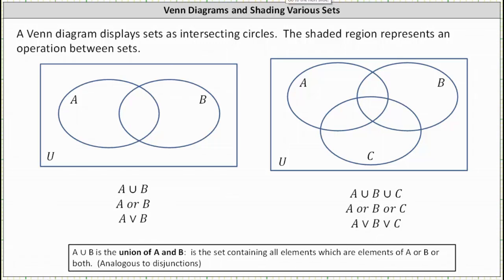Now let's get a couple of examples of unions. On the left, we have A union B, or the union of A and B, which we can also read as A or B. A union B is the set containing all the elements which are elements of A or B or both.